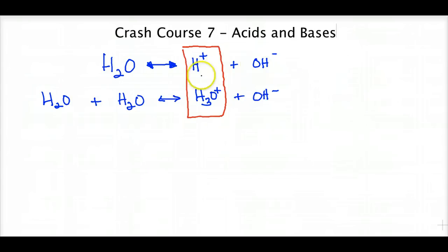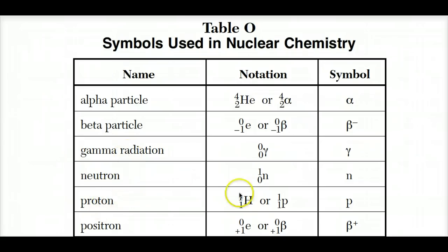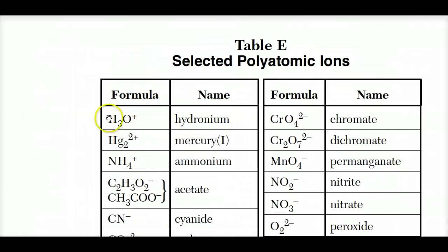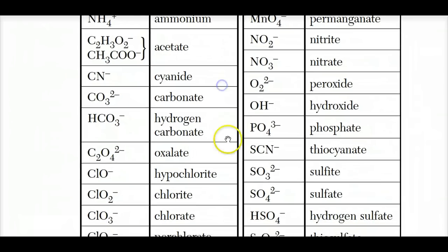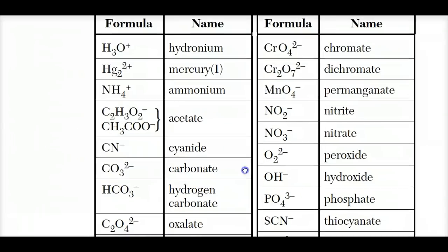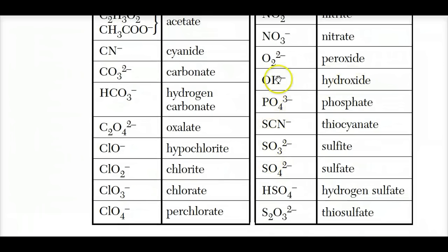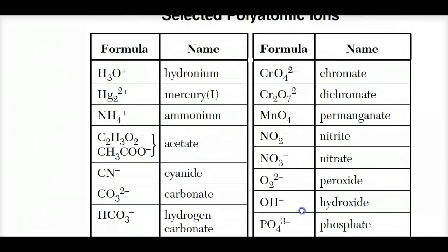Table O and Table E discuss these values. Table E lists the proton with mass of one and charge of one. It also shows the hydronium ion H₃O⁺, which is water holding on to an H⁺. And of course we have our hydroxide listed there too. Do not confuse hydroxide with hydronium — they sound very similar but you need to know the difference.